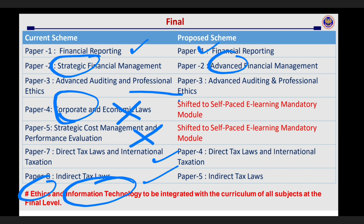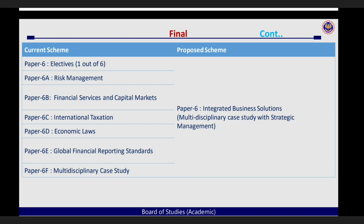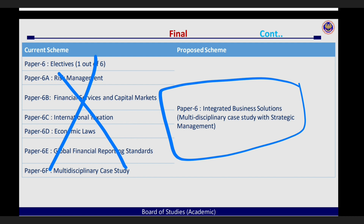Ye economic law aur cost management jo hai, ye aapka shift ho gaya hai self-paced e-learning mandatory module mein, jo ki hum aage samajhne wale hain. Final ka jo elective subject tha, jo open book ka paper tha, paper no. 6 electives, woh hat gaya hai. Uski jagah ab hamare paas ek compulsory paper 6 aa gaya hai jiska naam hai integrated business solutions, multi-disciplinary case study with strategic management. Iska matlab kahin na kahin aapko ek case study de jayegi jisko aapko crack karna padega, apne knowledge se isko solve karna padega.